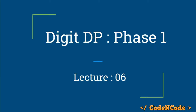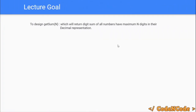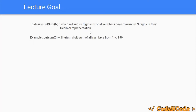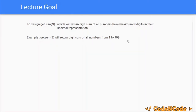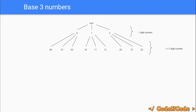Hello guys, this is CodeNCode and this is the 6th lecture of the Dynamic Programming course Part 2. As explained in the previous lecture, I have divided the Digit DP problem into three phases. This is Phase 1, and the goal is to design a function that returns the digit sum of all numbers having at most N digits in their decimal representation — so basically digit sum of all numbers from 1 to 999.